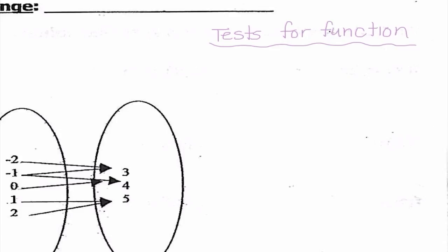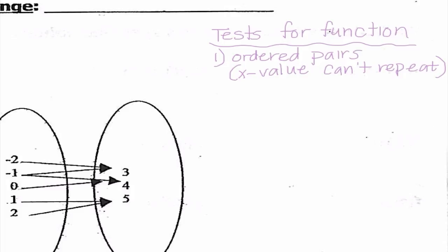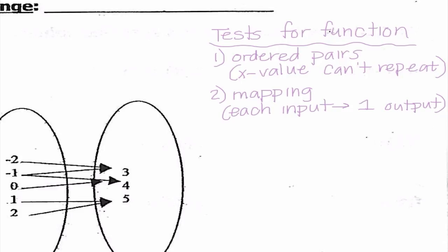Not every relation is a function. There are a few different tests we will use to see if something is a function or not. The first is to just look at ordered pairs — the x value cannot repeat. If the x value repeats, it is not a function. For example, if we had an ordered pair of (2, 0) and an ordered pair of (2, 1), that is not a function because the input 2 would have more than one output. We only need to use one of these tests — whichever the directions say or whatever I think is easiest and quickest.